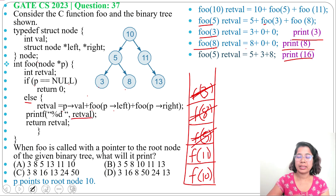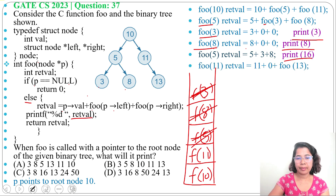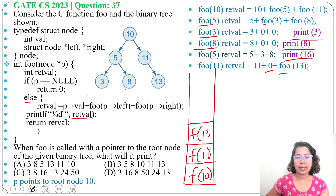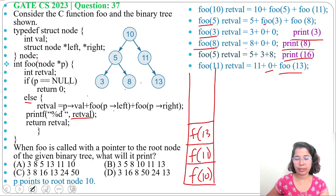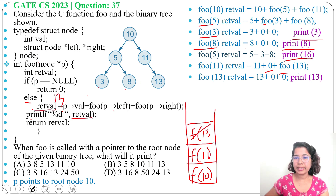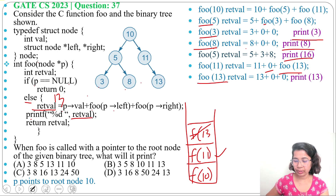Next we call foo(11). Node 11 has no left child, so 11 plus 0 plus foo(13). We push foo(13) onto the stack and call it. 13 is not null, so return value is 13 plus 0 plus 0 (no children). foo(13) returns 13 and prints 13.